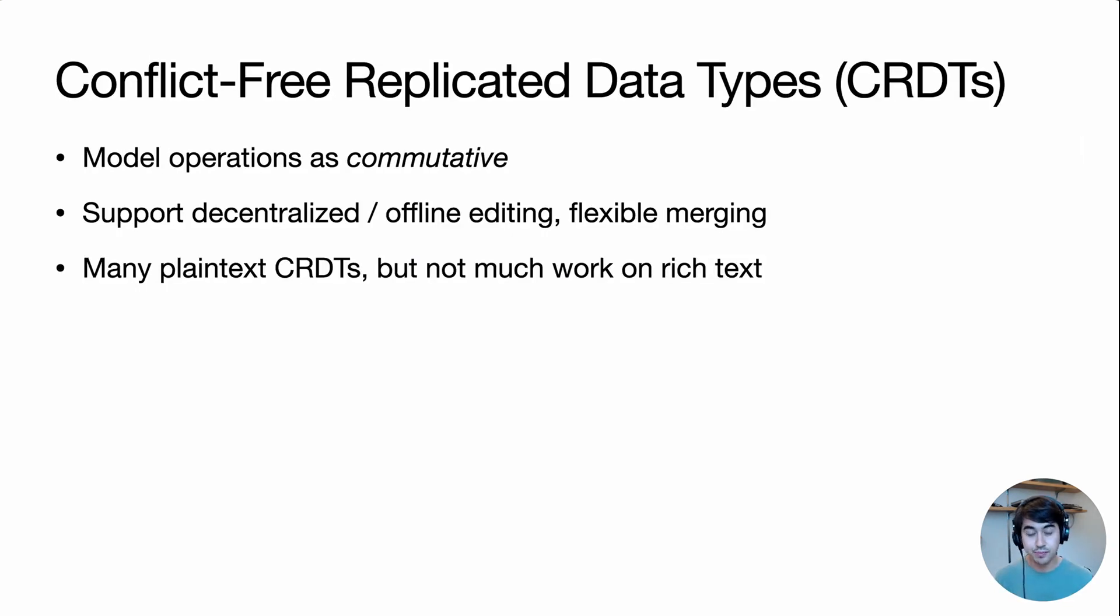A different class of approaches is known as conflict-free replicated data types, or CRDTs. And the key idea here is to model operations in a fundamentally commutative way so we avoid the need to transform operations relative to each other. And CRDTs can have good support for decentralized and offline editing workflows, and can support more flexible merging and branching workflows like the ones I was just mentioning. However, while there's many plain text CRDTs, there's not been much work on rich text CRDTs. There's no published academic work on the subject.